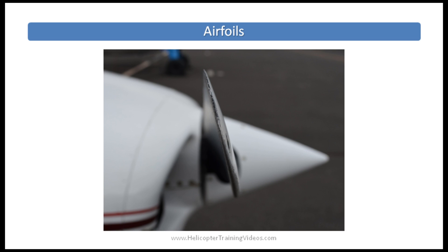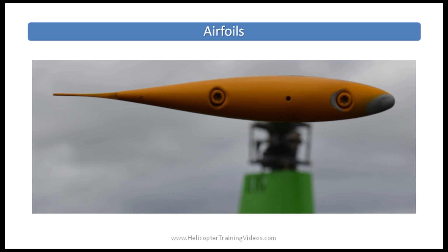Here we have a propeller from a Cessna 172. Not a great picture but you can kind of see the airfoil shape there, and you can also see the blade twist. And here's something very familiar to R-22 pilots — this is the main rotor airfoil on an R-22, which is a good example of the combination producing lift, thrust, and control.